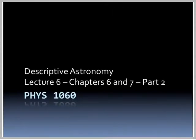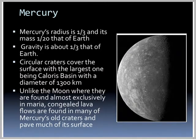This is Physics 1060, Descriptive Astronomy, Lecture 6. We're going to continue talking about the terrestrial planets, particularly Mars, Venus, and Mercury. So let's start with the closest planet, Mercury.